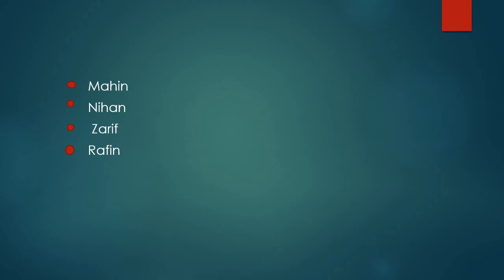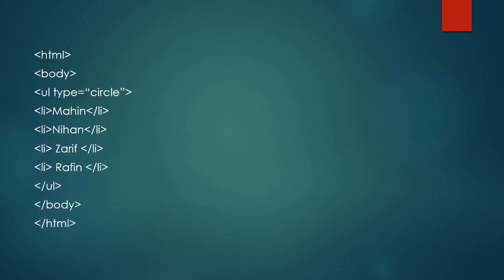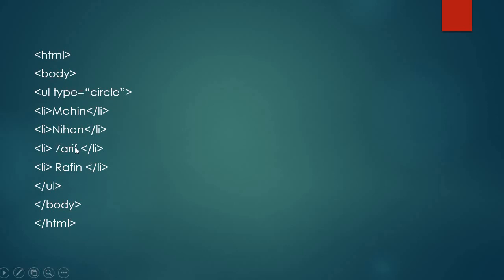কোতে আমাথ কোটে কয় সেটা এখানে কোটা কে ধকে ছে ওয়ার্লড কে। অনওয়ারডার লেস্চ তার বারণ মধ্যে হচ্ছে মাহীন এলাই কলোচ। তারপর হচ্ছে আবার এলাই মধ্যে। Here is the question of the number of questions in HTML code, and the question is about an unordered list.